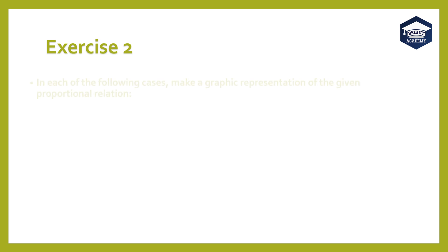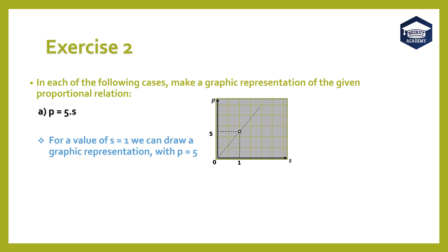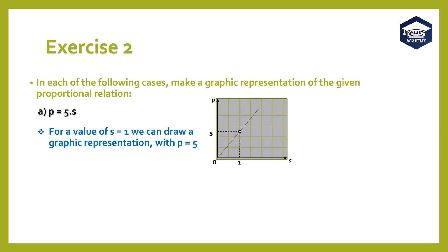Exercise 2. In each of the following cases, make a graphic representation of the given proportional relation. Part A: p equals 5 times s. For a value of s equals 1, we can draw a graphic representation with p equals 5.